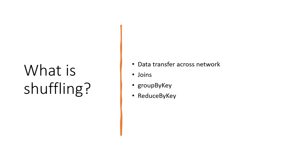Another term that comes up often is shuffling. What is shuffling? We spoke about data partitions being sent to different executors — that data transfer across the network is shuffling. It happens whenever partitions need to be sent to different executors, or when we do a group by, order by, or sort. Joins also lead to data shuffling. This causes a performance hit, so our goal is always to minimize shuffling. Data shuffling cannot be avoided entirely, but we have to minimize the amount of data being shuffled.